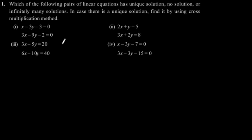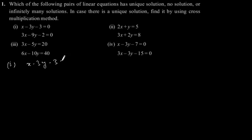Exercise 3.5, Question number 1: Which of the following pairs of linear equations has unique solution, no solution, or infinitely many solutions? In case there is a unique solution, find it by using the cross multiplication method. Solving for the first part: x minus 3y minus 3 is equal to 0, and 3x minus 9y minus 2 is equal to 0.